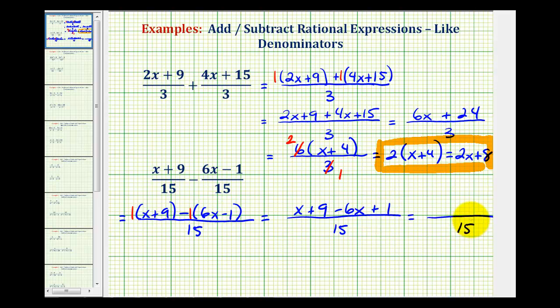And now we'll combine the like terms in the numerator. One x minus six x is negative five x, and nine plus one would be plus ten.